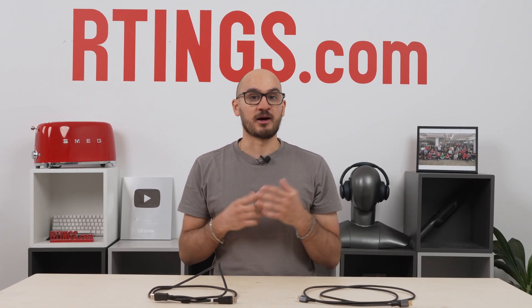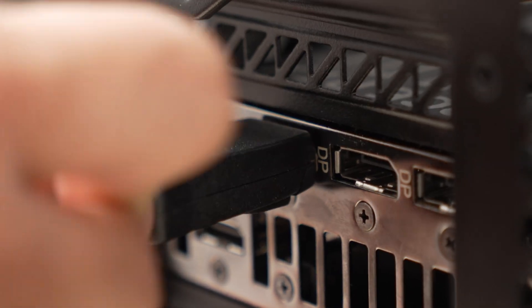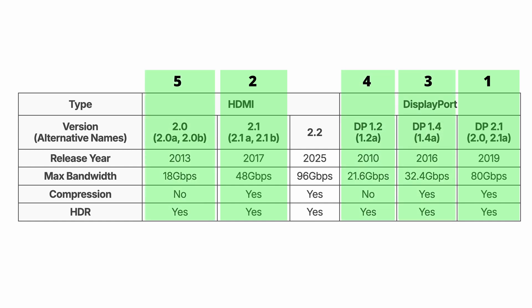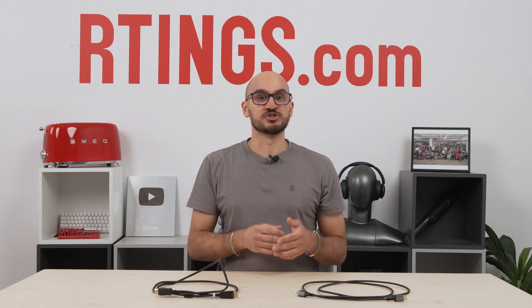But it'll be a long time before HDMI 2.2 is widely adopted, so where does that leave us? If we set it aside, DisplayPort 2.1 is the reigning king, with a max bandwidth of up to 80 gigabits per second. Then you have HDMI 2.1 at 48 gigabits per second, followed by DP 1.4 and DP 1.2, and finally HDMI 2.0. Older versions of each are mostly obsolete at this point. If you're buying a monitor today, it'll most likely support one of these newer versions.